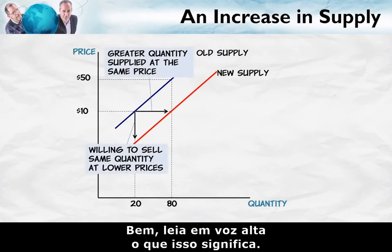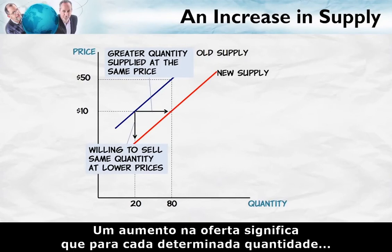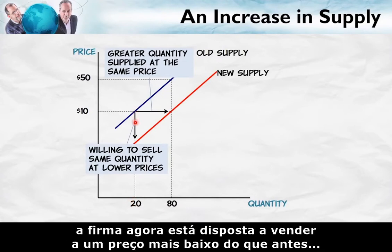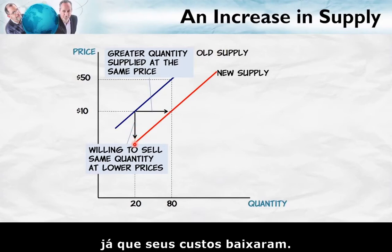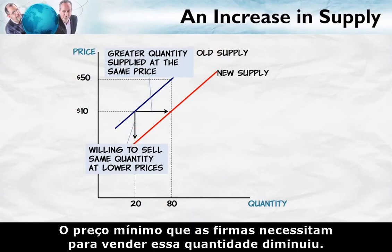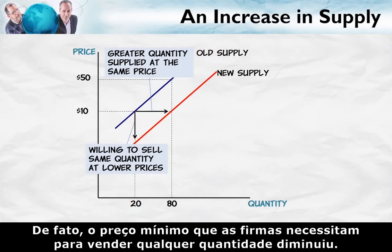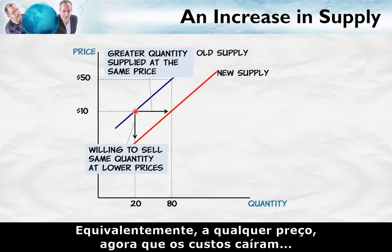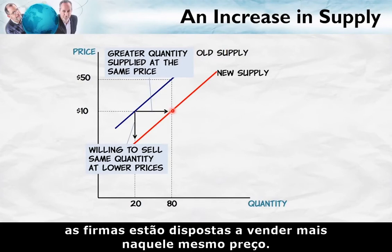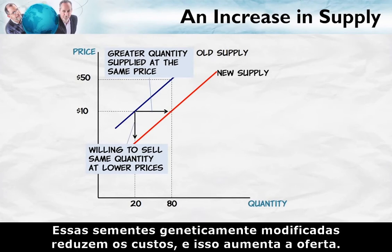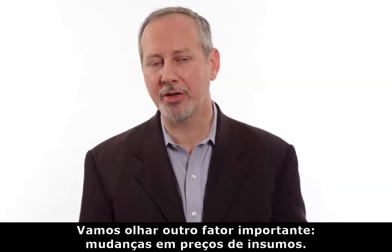Why does the curve shift down and to the right? An increase in supply means that for any given quantity, the firm is now willing to sell that quantity at a lower price than before. Since their costs have fallen, the minimum price firms require to sell any quantity has decreased. Equivalently, at any price, firms are now willing to sell more. That's what an increase in supply means — genetically modified seeds reduced cost and that increases supply.